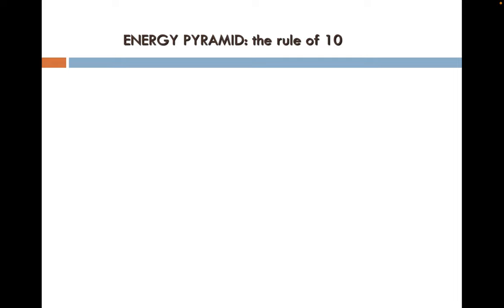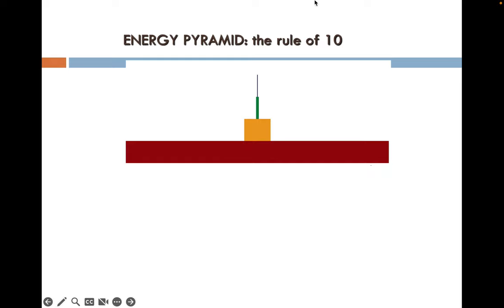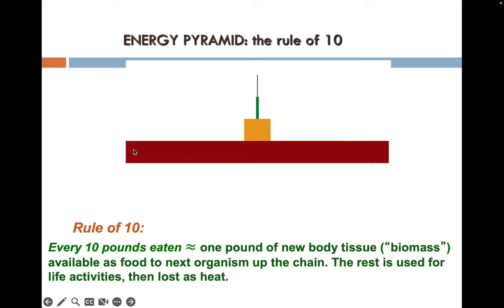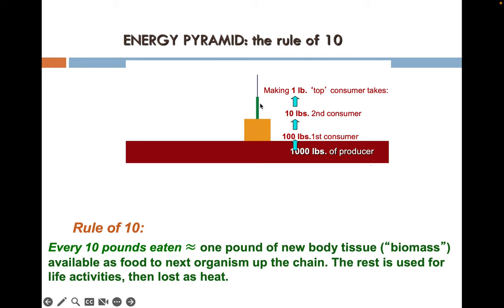Let's start with energy pyramids and the rule of 10. The bottom layer of an energy pyramid is the base of the food chain — always producers at the bottom, something like grass. If there's a thousand pounds of producers or grass in a given ecosystem and you go up one level, something like a rabbit eats that grass. We'd expect about a hundred pounds of rabbits, because only 10% of the energy makes it up each level of the food chain as energy is transferred.